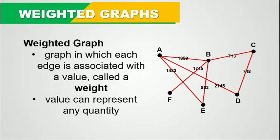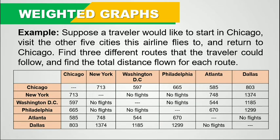In this video we're going to discuss what weighted graphs are. A weighted graph is a graph in which each edge is associated with a value called a weight. The value can represent any quantity — it could be a distance, a time, or a traveling cost. This is an example of a weighted graph where every edge has a corresponding weight.